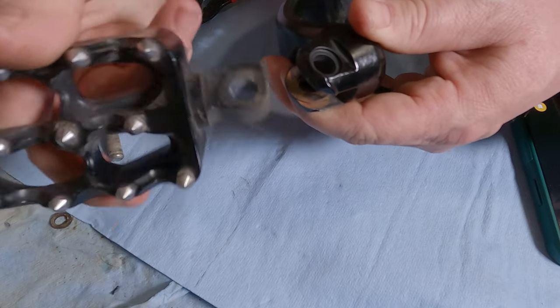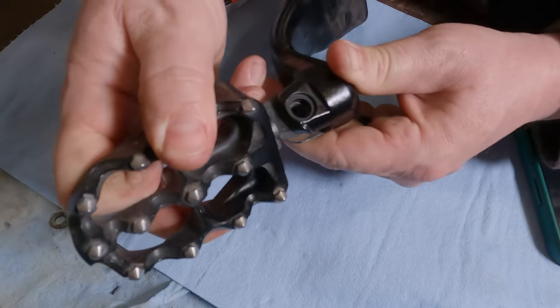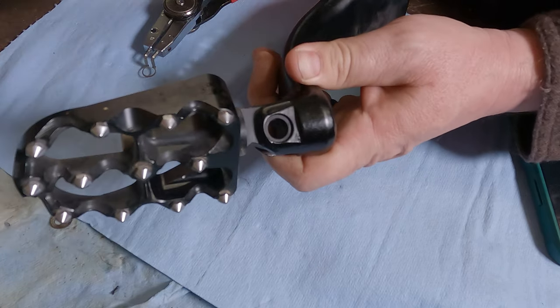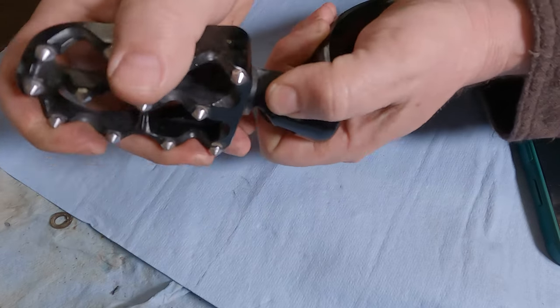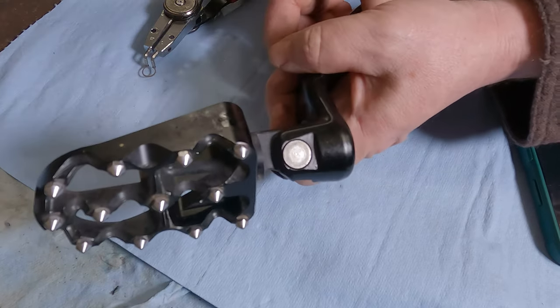Then you can take your new foot peg and slide that in place. You should be able to look down inside there and see everything's lined up. Then take your pin, slide it back in there like so.